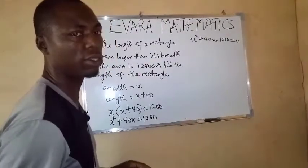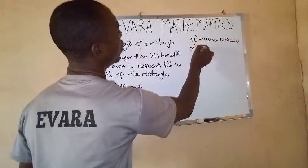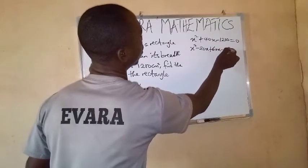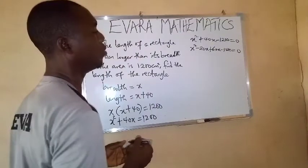That is minus 20 and plus 60. So you have x squared minus 20x plus 60x minus 1,200 equals to 0.